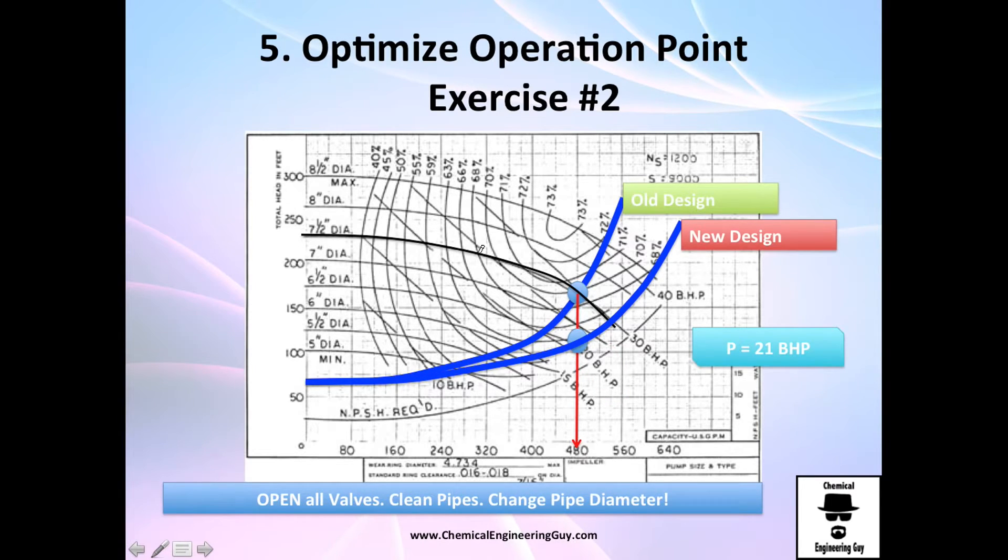And how can I lower the system curve? So this is my system curve, and if I wanted to lower it, I will need to do one of the next, or at least one of the next three.